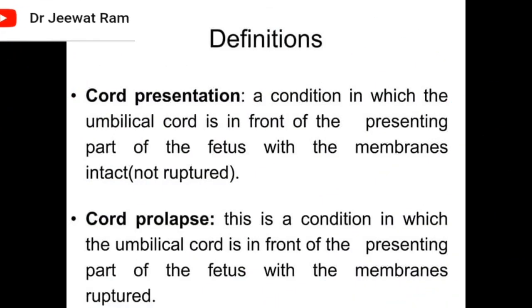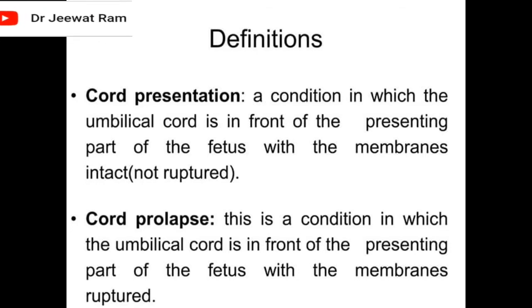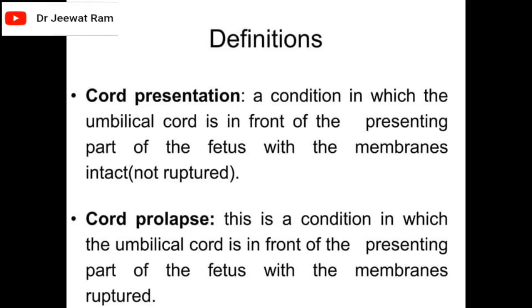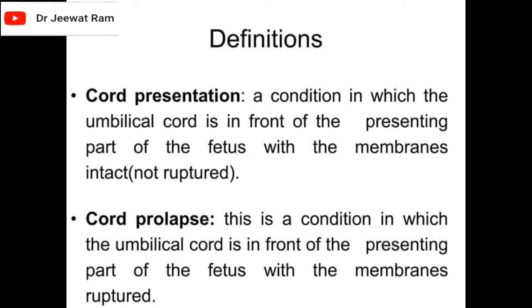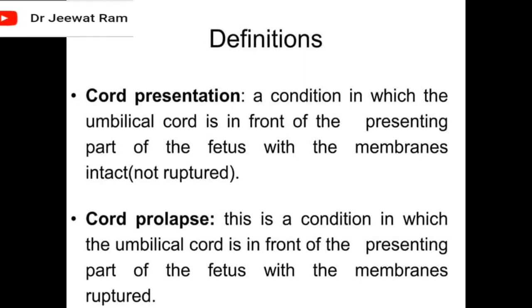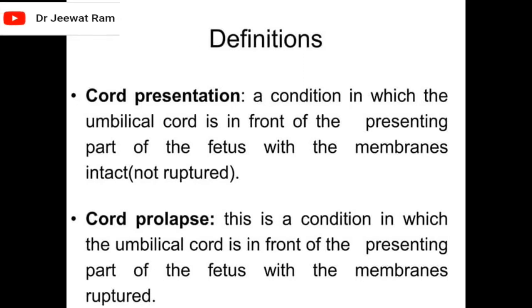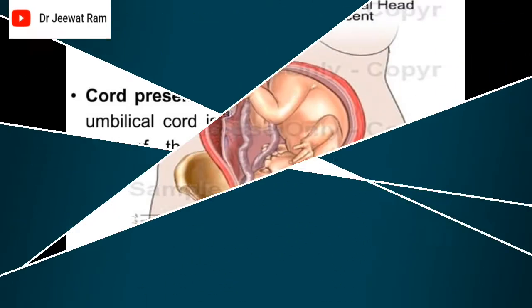Cord Presentation is a condition in which the umbilical cord is in front of the presenting part of the fetus with the membranes intact, not ruptured. Cord Prolapse is a condition in which the umbilical cord is in front of the presenting part of the fetus with the membranes ruptured.